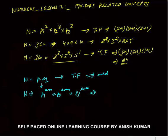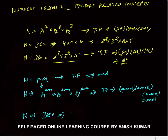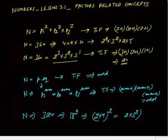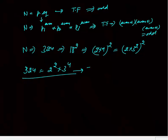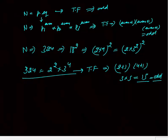So the prime factorization of any perfect square is of the form P1^(even) · P2^(even) · P3^(even). Total factors = (even+1)(even+1)(even+1) = odd × odd × odd = odd. For example, 18² = (2 × 3²)² = 324 = 2² × 3⁴. The power of every prime is even, so total factors = (2+1)(4+1) = 3 × 5 = 15, which is odd.